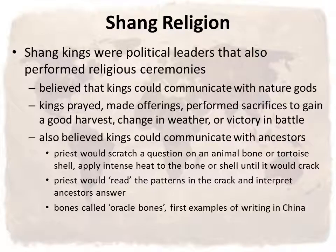In the Shang Dynasty, kings were political leaders but also had important religious roles. People believed that kings could communicate with their nature gods, and because of this, kings were in charge of praying, making offerings, and performing sacrifices in order to gain a good harvest, get a change in weather, or secure a victory in an upcoming battle. People also believed kings could communicate with ancestors. Priests would scratch a question on an animal bone or a tortoise shell, then apply intense heat until it cracked. The priest-king would then read the patterns in the cracks and interpret the ancestors' answers. These bones were called oracle bones, and they were the first examples of writing in China.